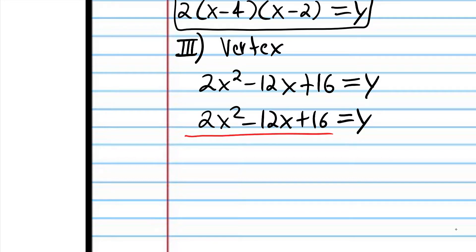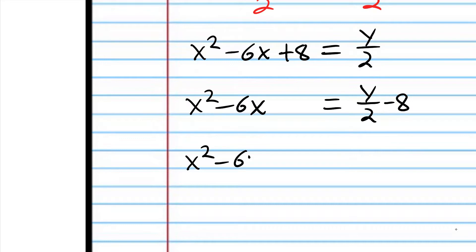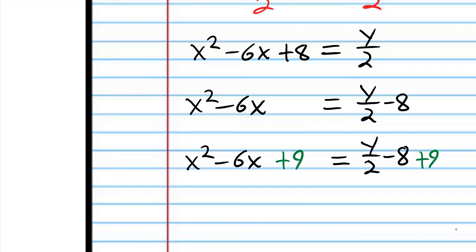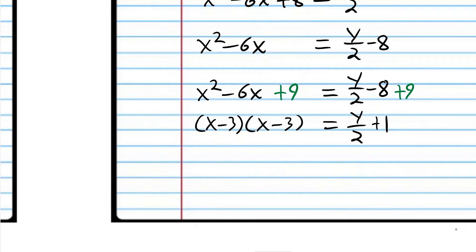So we have to get rid of that by dividing both sides by 2. We get x squared minus 6x plus 8 equals y over 2. Then I'll take the 8 and put it on the other side. Now we're ready to complete the square: the coefficient of x divided by 2 and squared gives us 9. So I'm going to add 9 to both sides.